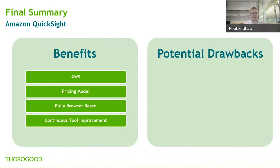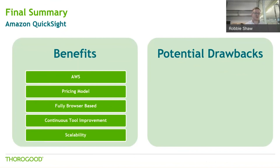One point I haven't really made in the earlier slides is that QuickSight is continuously improving - it's actually really impressive how often they're bringing out new features, pretty much every two weeks. The real benefit is that if you think this tool is pretty good now, it's going to be even better in a year or two. And finally, scalability - it's fully managed, you don't have to provision resources or manage the infrastructure, and it can meet whatever demand you require of it, so even if QuickSight takes off in your organization you should be able to handle that level of demand.